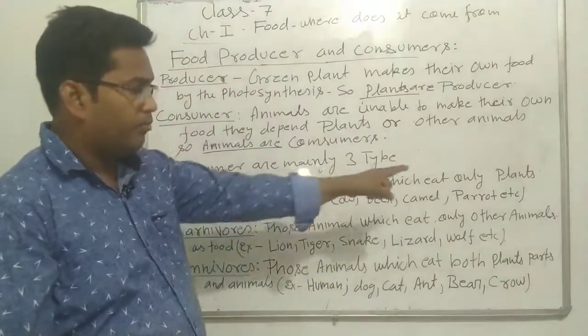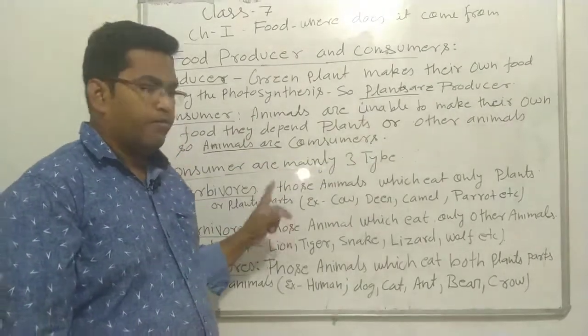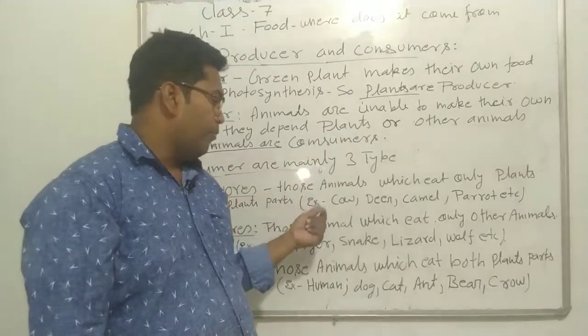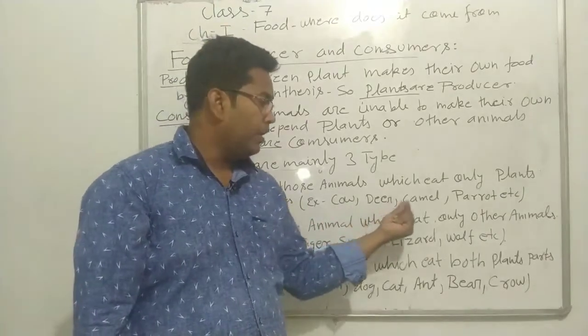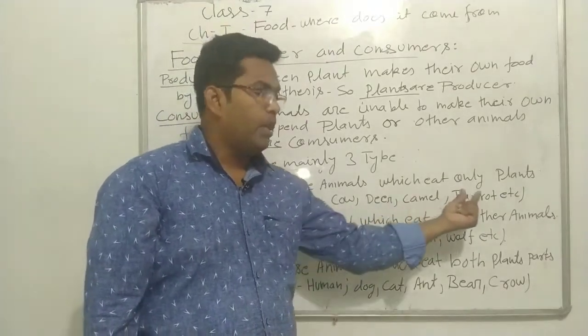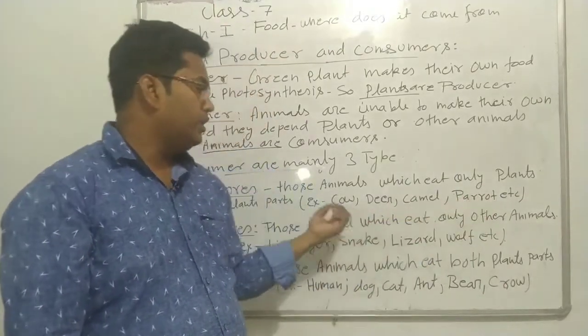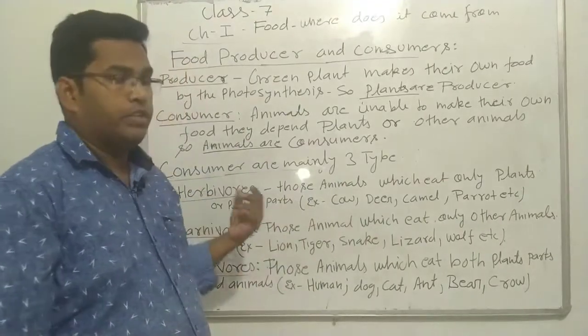Those animals which eat only plants and parts of plants — for example, cow, deer, camel, parrots — all these are herbivores.